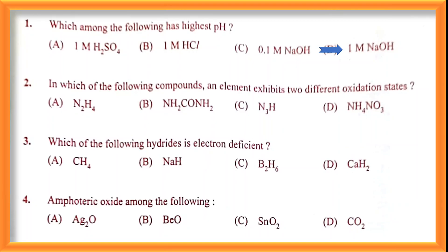Question number two: in which of the following compounds does an element exhibit two different oxidation states? The answer is option D — NH₄NO₃. In this compound, nitrogen exhibits two different oxidation states.